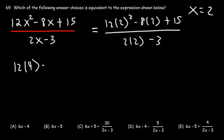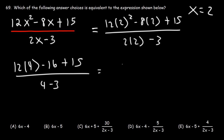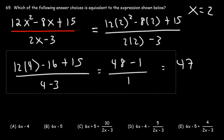2 squared is 4. 8 times 2 is 16. 2 times 2 is 4. And 12 times 4 is 48. Negative 16 plus 15 is negative 1. 4 minus 3 is 1. So this whole thing is 47 when x is 2.